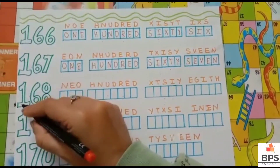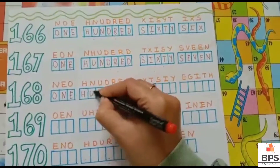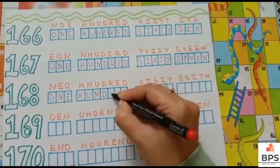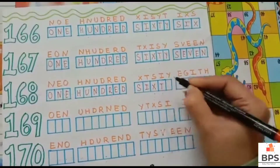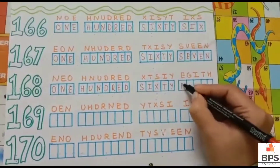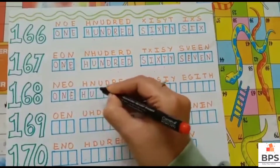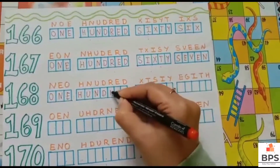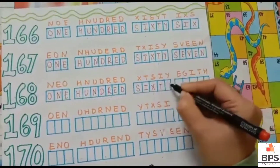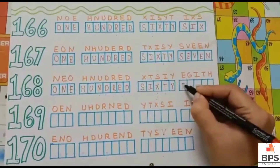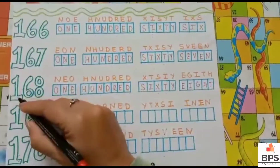One hundred sixty eight. 168. O-N-E, one. H-U-N-D-R-E-D, hundred. S-I-X-T-Y, sixty. E-I-G-H-T, eight. One hundred sixty eight.